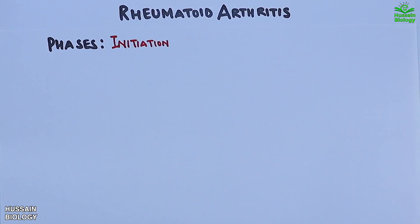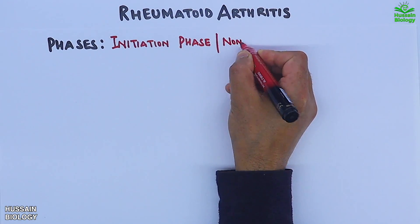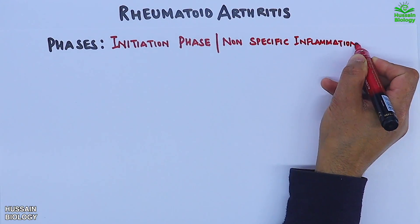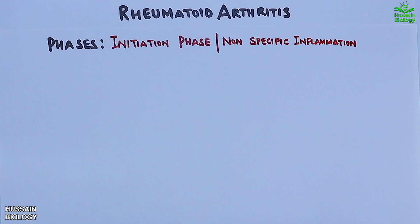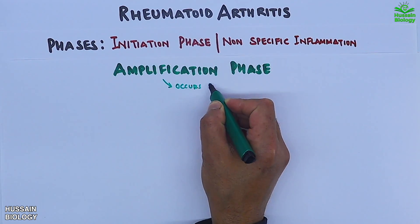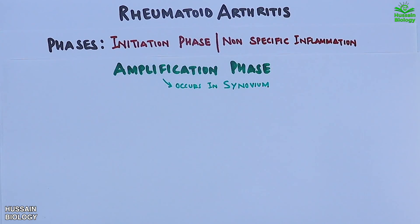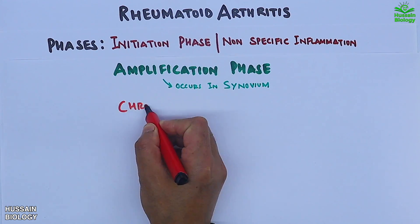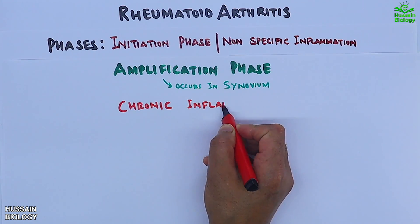Rheumatoid arthritis is divided into three important phases: the first phase is the initiation phase, which is non-specific inflammation; the second phase is the amplification phase, which occurs in the synovium; and the third phase is chronic inflammation.